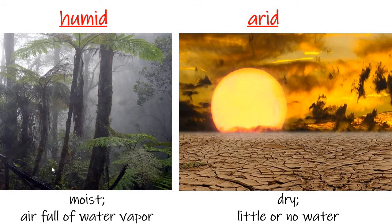Now let's talk about the amount of moisture in the air. Some biomes are humid, h-u-m-i-d, meaning they're moist — the air is full of water vapor. You can literally see the drops of water vapor in the air in this example. The opposite is arid, a-r-i-d, which describes an area that is very dry with little or no water.